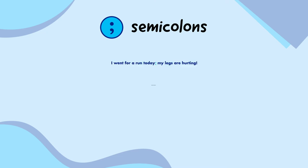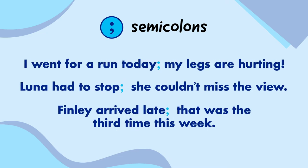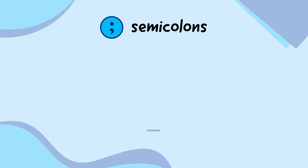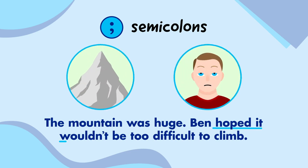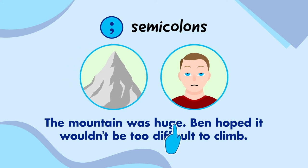Semicolons are used to link phrases or short sentences together. For example, 'The mountain was huge. Ben hoped it wouldn't be too difficult to climb.' These two sentences make sense when separated like this, but we can link them together with a semicolon to make one longer sentence. Instead of sounding like two unconnected things, the semicolon helps to show that Ben worried about climbing the mountain because it was huge.